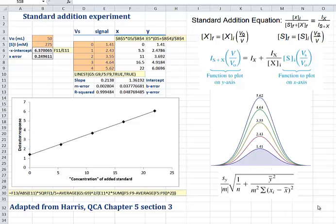This is a brief tutorial to describe how you use Microsoft Excel to create a standard additions plot. This work is adapted from Harris's Quantitative Chemical Analysis book, Chapter 5, Section 3. It would be a good idea to review that chapter after you've looked at this tutorial.